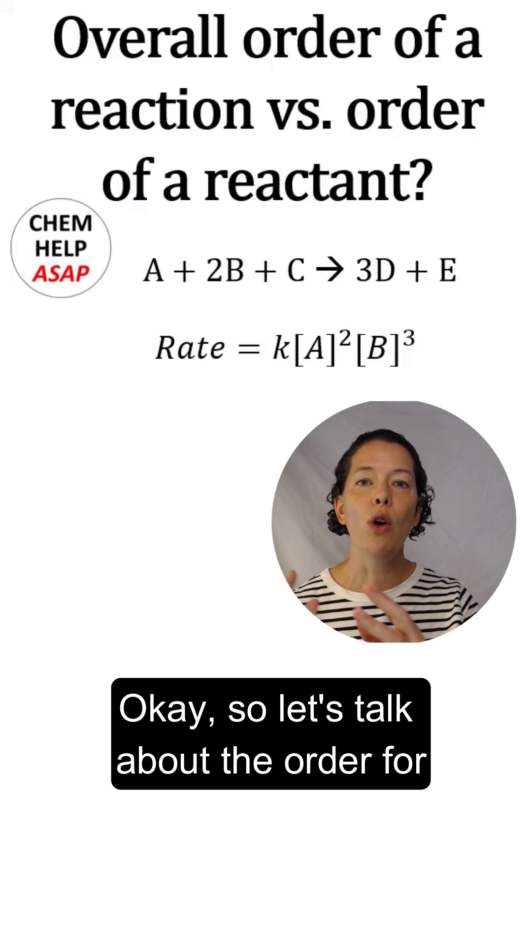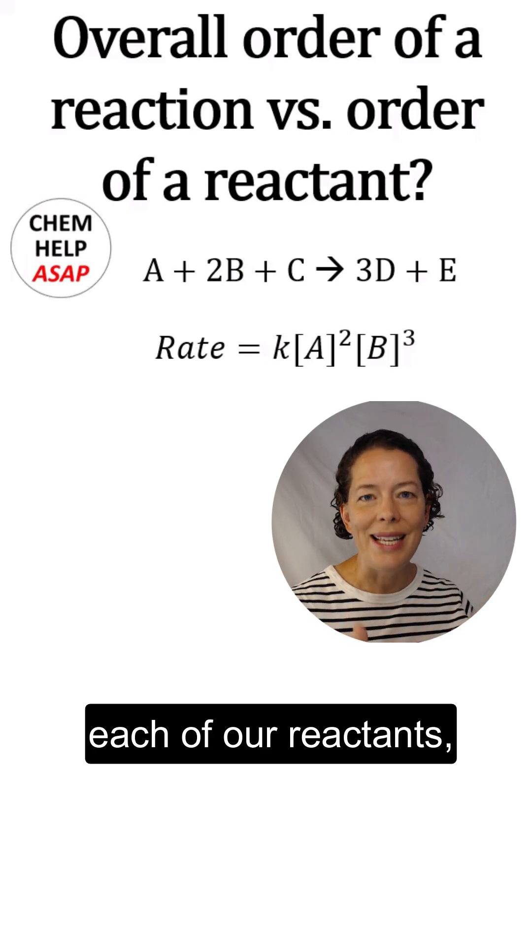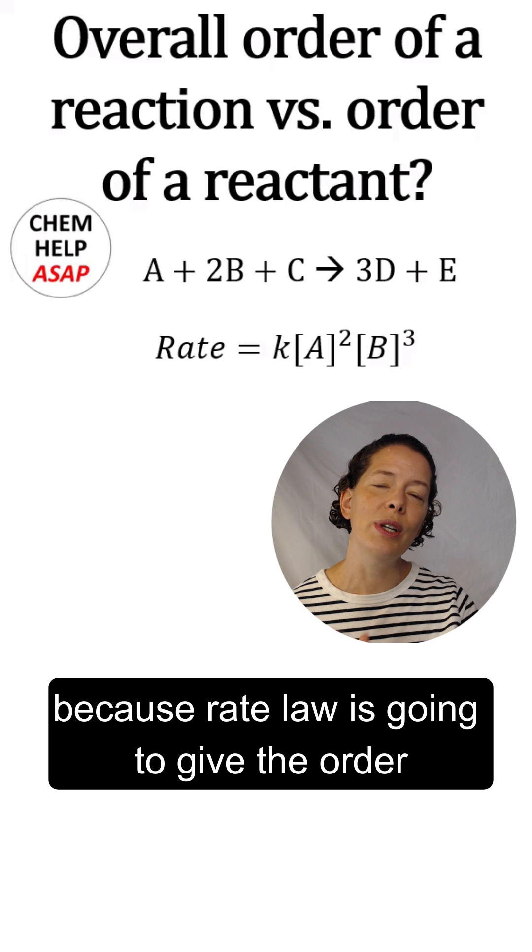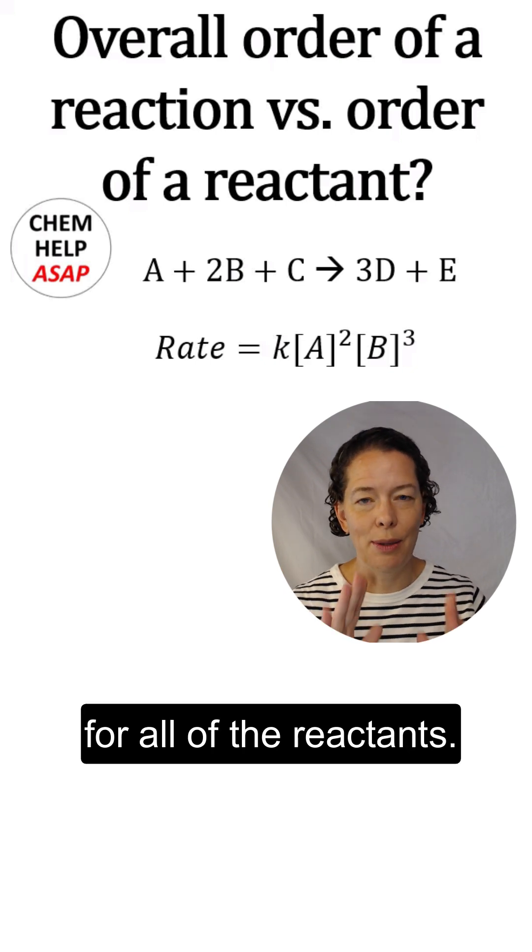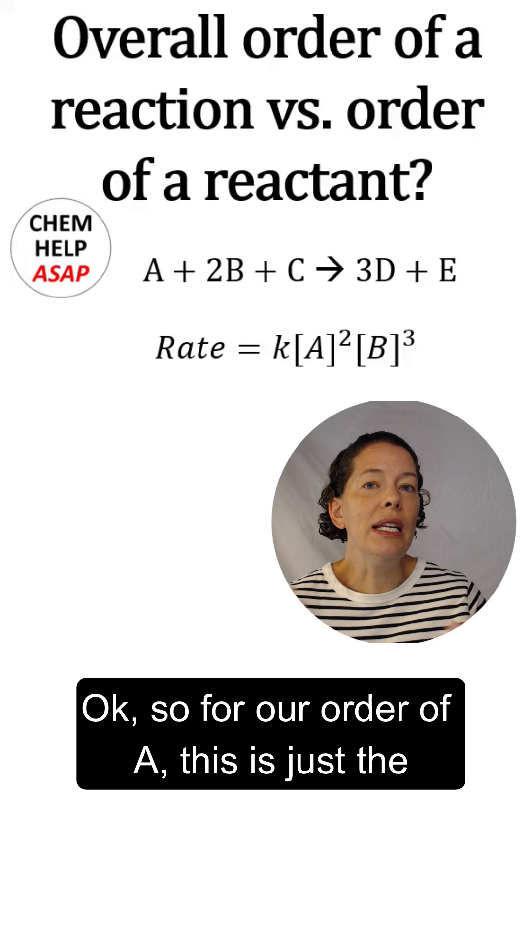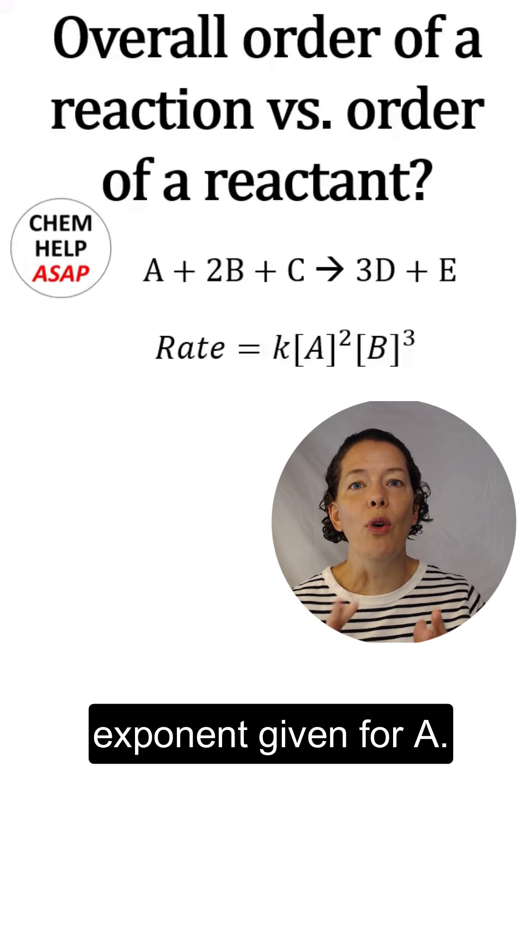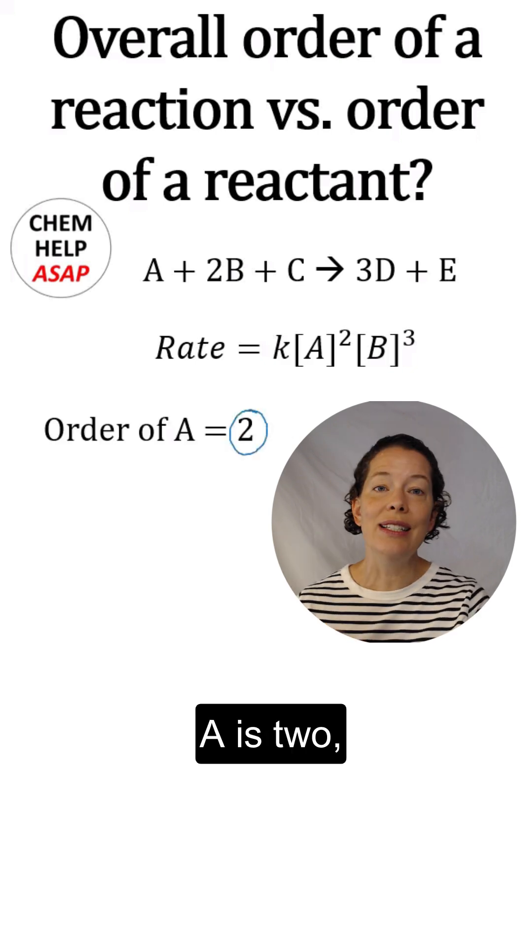So let's talk about the order for each of our reactants, because rate law is going to give the order for all of the reactants. So for our order of A, this is just the exponent given for A. So the order of A is 2.